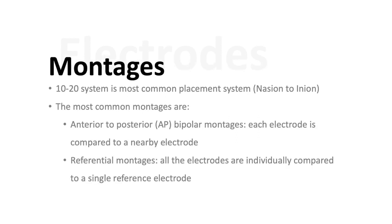There are certain ways that electrodes are compared to one another, which are very commonly used. The most common montage, which is a system of how these electrodes are compared, is the anterior to posterior bipolar montage. In this system, each electrode is compared to a nearby electrode. The process of differential amplification, as we talked about before, is utilized in every montage. So there's always a comparison of one electrode to another.